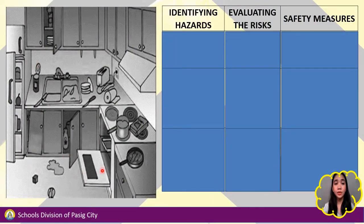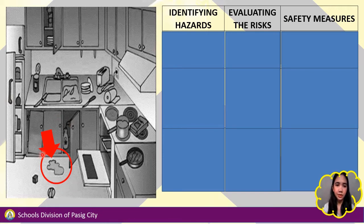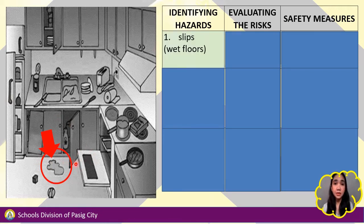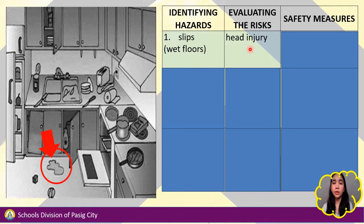Now look at the picture closely — we will do a risk assessment from here. The first step is identifying hazards. One example is slips or wet floors. The risk of having wet floors or slips is that it can cause head injury. What we can do about it is to wipe water spills immediately.